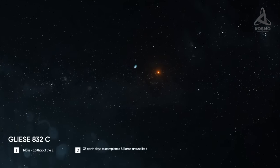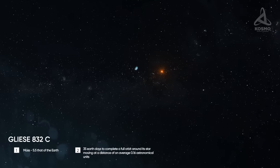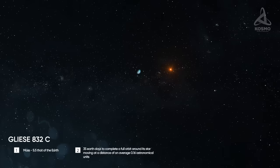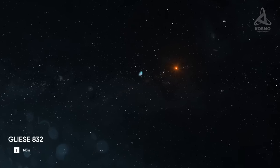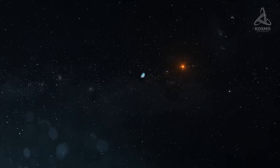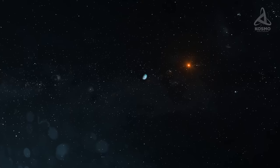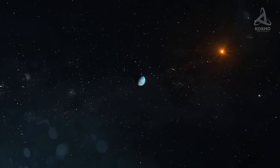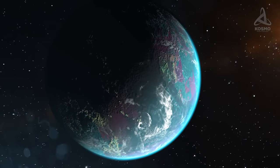The mass of Gliese 832 c is 5.5 that of the Earth. It takes the planet 35 Earth days to complete full orbit around its parent star, moving at a distance of an average 0.16 astronomical units. This is six times less than the distance between our Earth and the Sun.